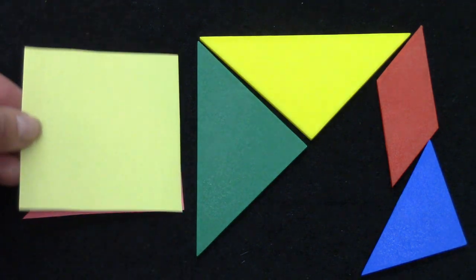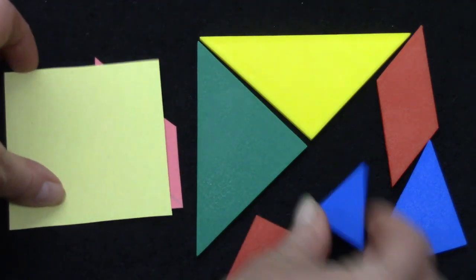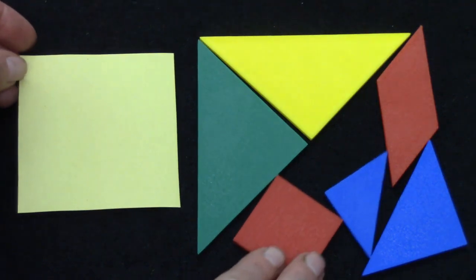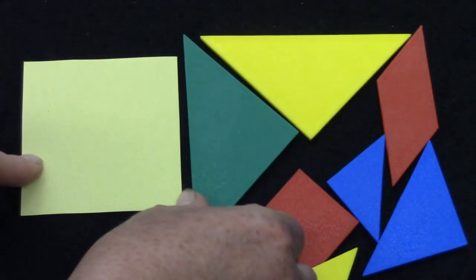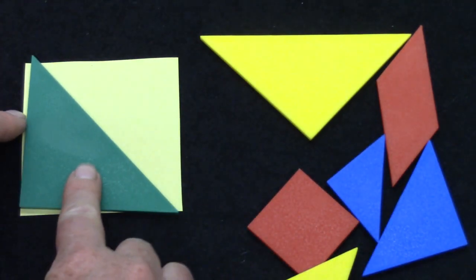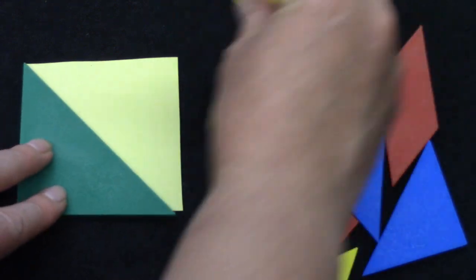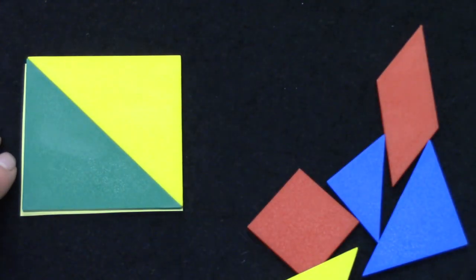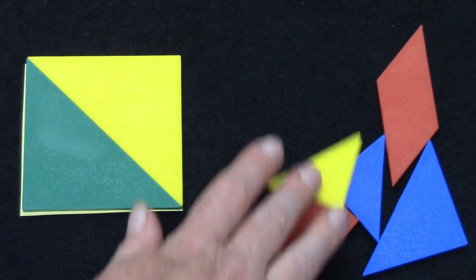Let's try doing another shape. This is a square and I wonder what different ways we could cover this square. Here's a pretty easy way, isn't it? I could cover it with just the two triangles.